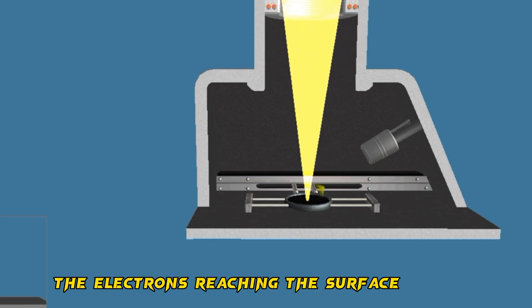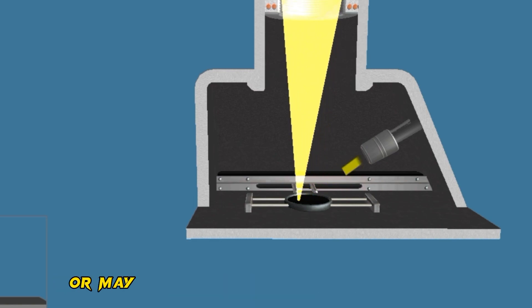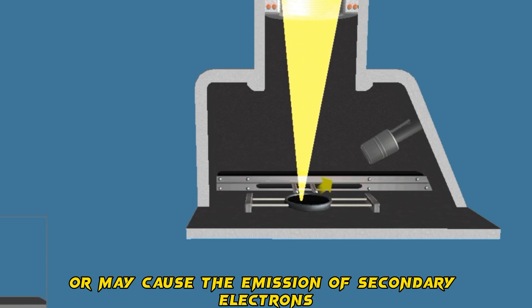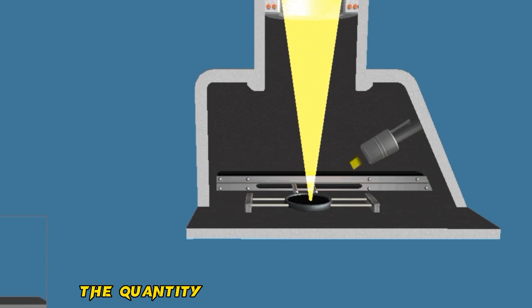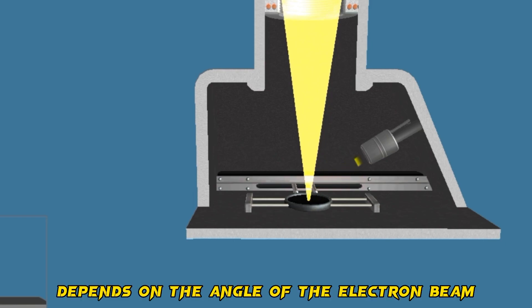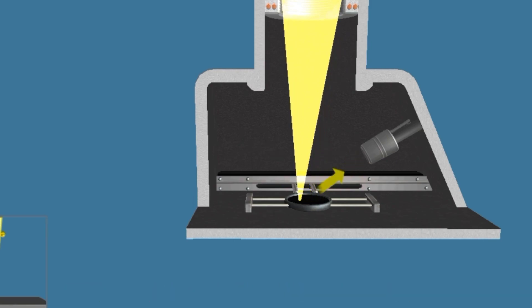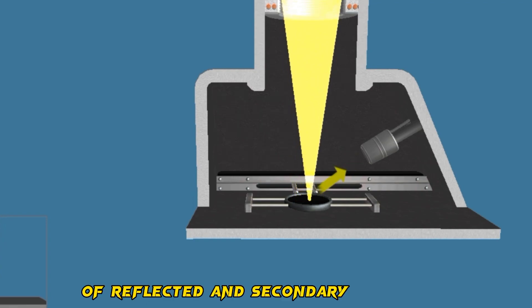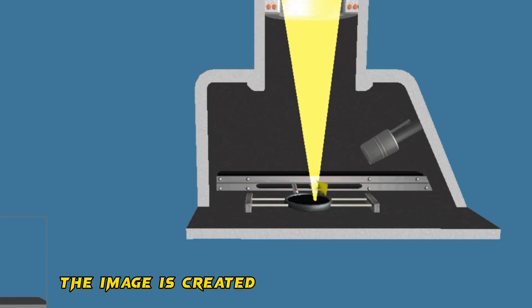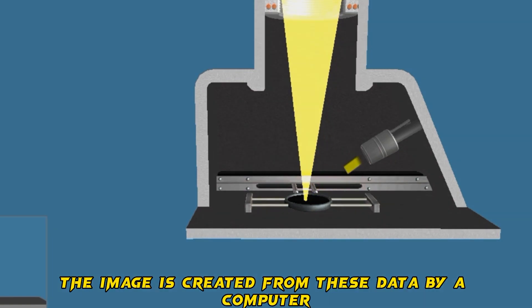The electrons reaching the surface may be reflected or may cause the emission of secondary electrons. The quantity of these in one direction depends on the angle of the electron beam and the surface. The detector measures the quantity of reflected and secondary electrons. The image is created from these data by a computer.